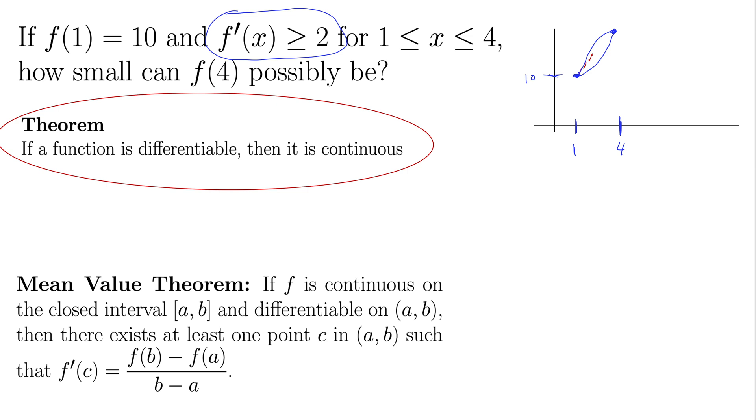So for this derivative to exist and be greater than or equal to 2 for every x between 1 and 4, we can say that is differentiable and thus continuous. So we can check off the conditions for the mean value theorem.